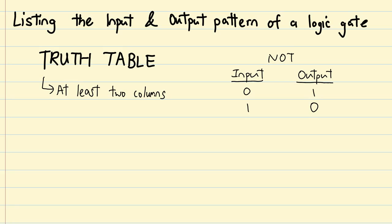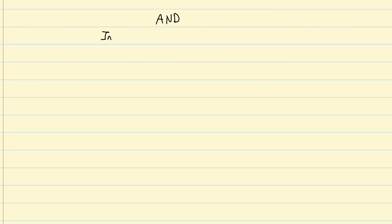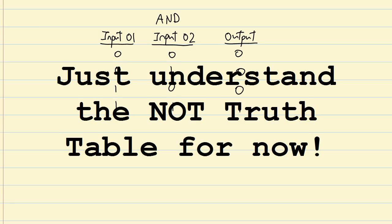Truth tables always have at least two columns — at least one for input values, and another for the output value based on the gate's processing. Of course, since most other logic gates take two values for input, their truth tables look a bit more complicated than what we're seeing here. Since the truth table for a not gate is pretty easy to understand, we'll leave the construction of truth tables to the next episode.